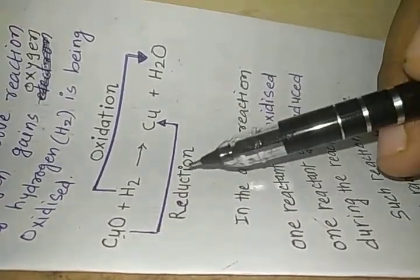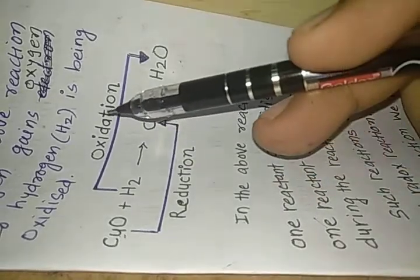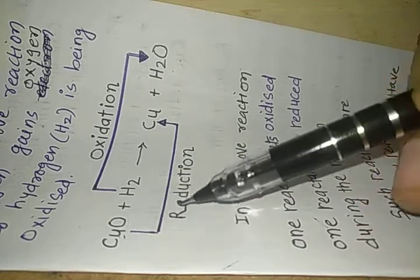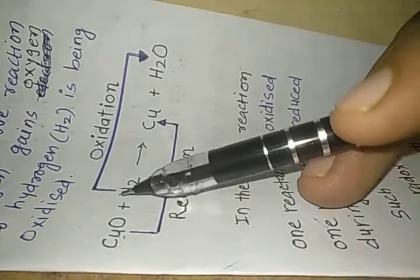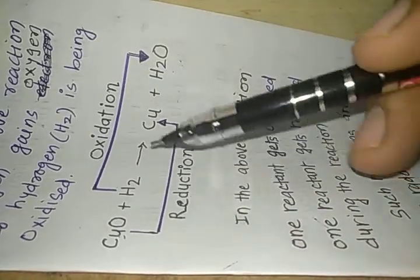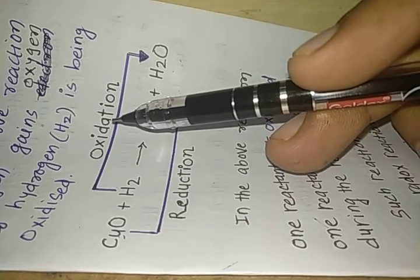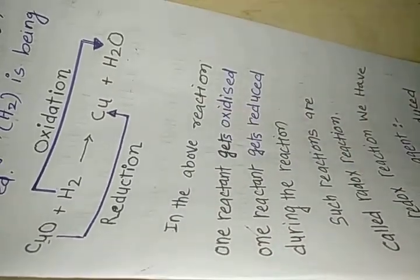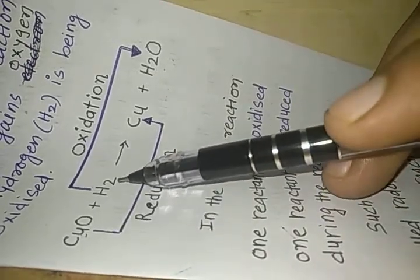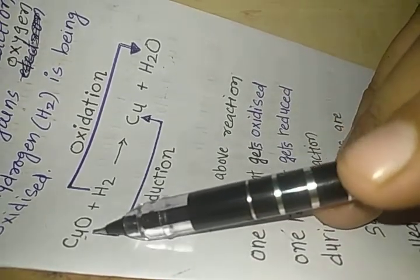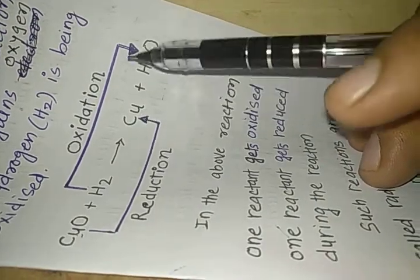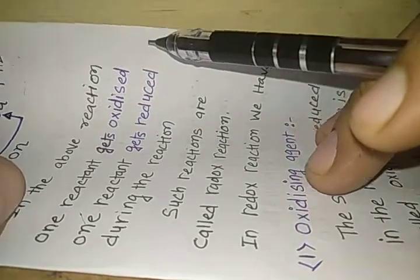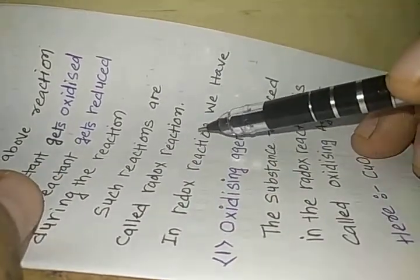In the previous video we studied about reduction and oxidation taking place at the same time. Copper oxide is reduced to copper, and hydrogen gains oxygen and is oxidized. Both reduction and oxidation take place simultaneously in this reaction — that is why such a reaction is known as a redox reaction. The black coating of cupric oxide on copper turns brown and we get pure copper.